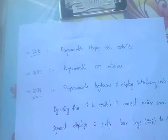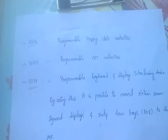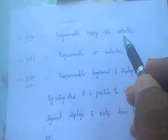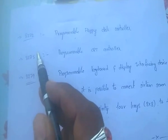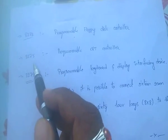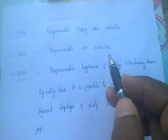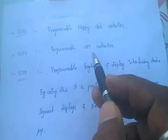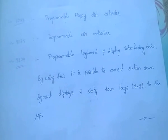8272 is a programmable floppy disk controller. 8275 is a programmable CRT controller — CRT is nothing but cathode ray tube, that is a visual controller.